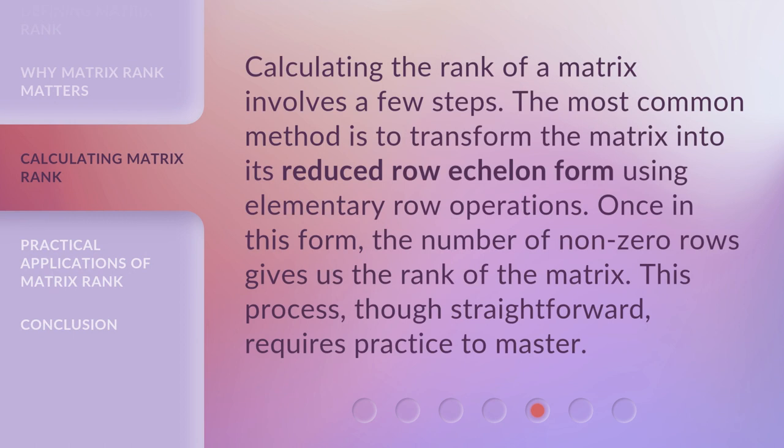Calculating the rank of a matrix involves a few steps. The most common method is to transform the matrix into its reduced row echelon form using elementary row operations. Once in this form, the number of non-zero rows gives us the rank of the matrix. This process, though straightforward, requires practice to master.